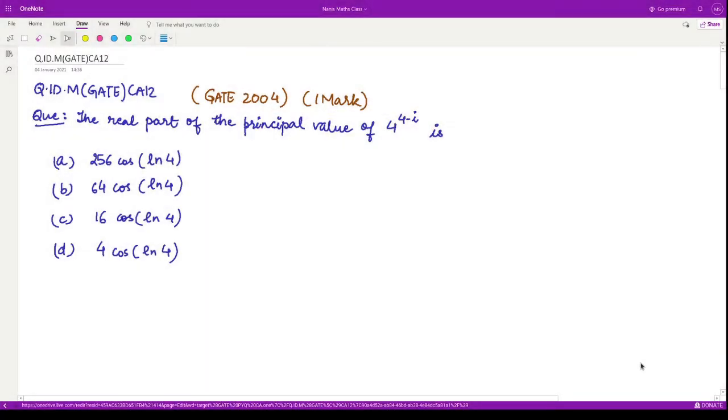Hello everyone, welcome to this next question on complex analysis. This question is from GATE 2004 and it is a one mark question. The question asks: what is the real part of the principal value of 4 raised to the power 4 minus iota?